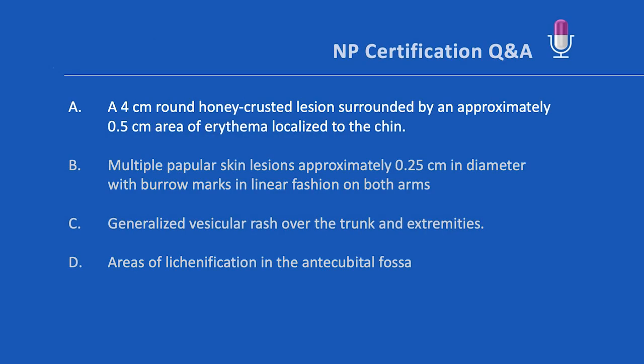Answer A: a four-centimeter round honey-crusted lesion surrounded by approximately a 0.5-centimeter area of erythema localized to the chin. This is the correct response and a fairly classic presentation of non-bullous impetigo. On the NP board, you're most likely going to get questions that are reflective of the classic presentation of the condition.